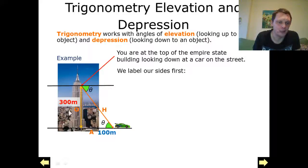First of all, as always, we label the sides. My opposite is opposite the angle I'm looking to calculate. My adjacent is next to my angle and my hypotenuse is the longest side, which is opposite the right angle.